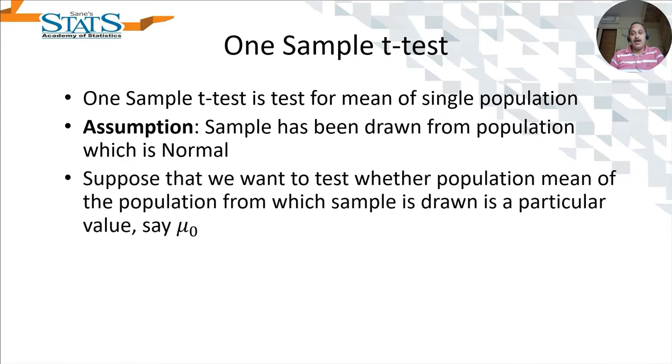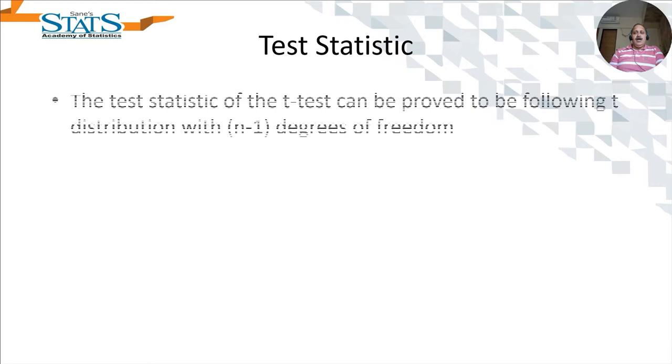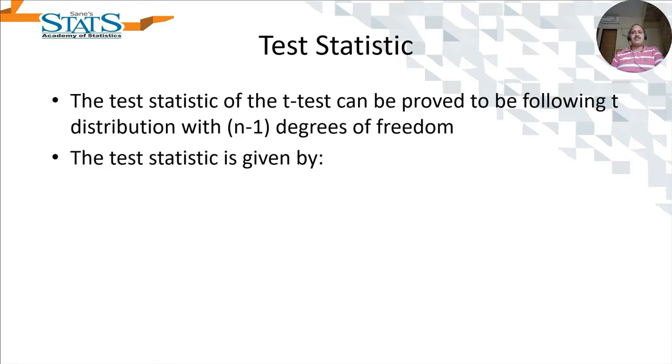The hypothesis statement, H0 and H1 for this is mu equals a specific value mu naught versus mu not equal to mu naught, or maybe mu greater than mu naught, mu less than mu naught. It may be two-tailed, one-tailed, or any kind of test.